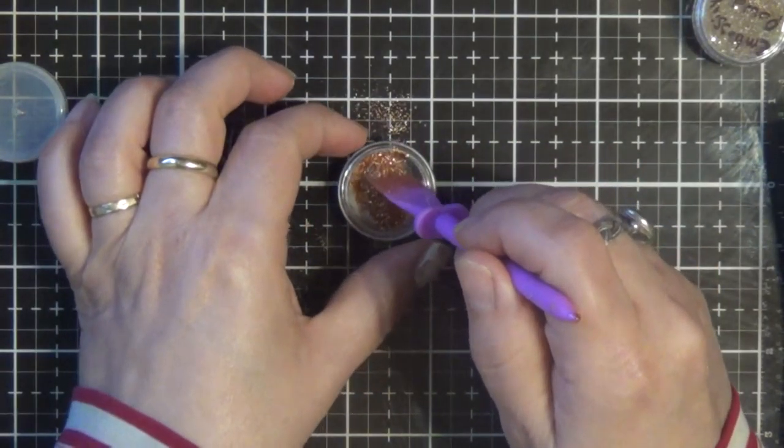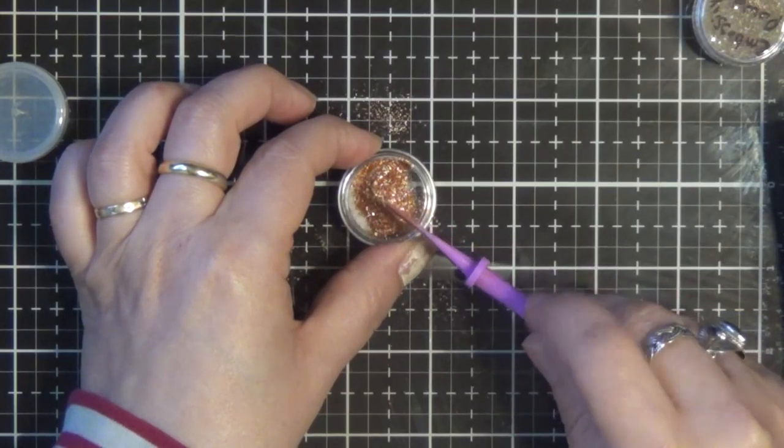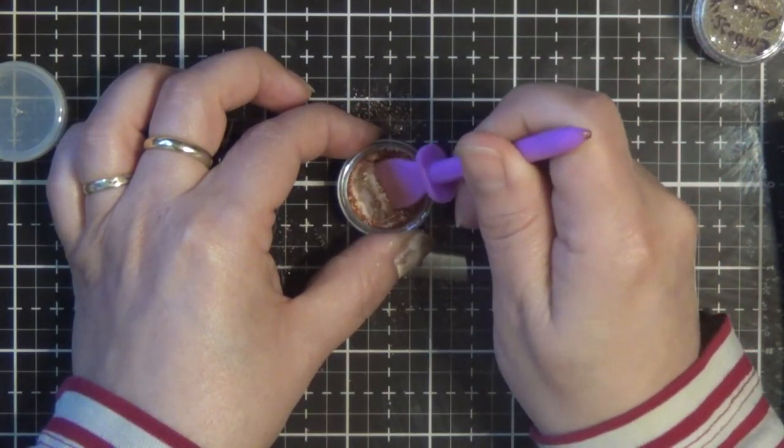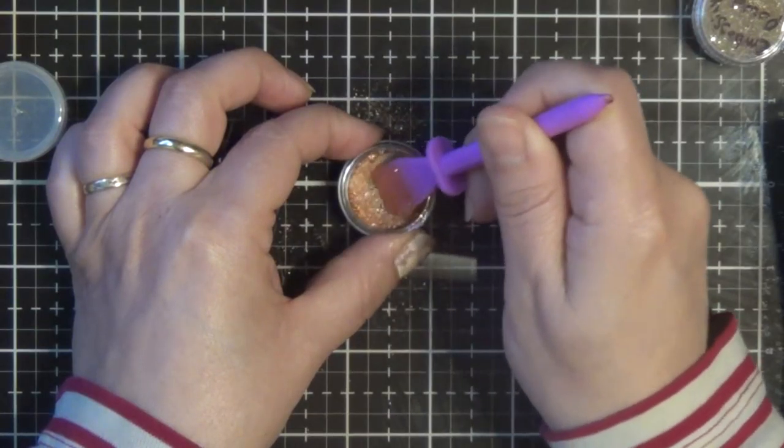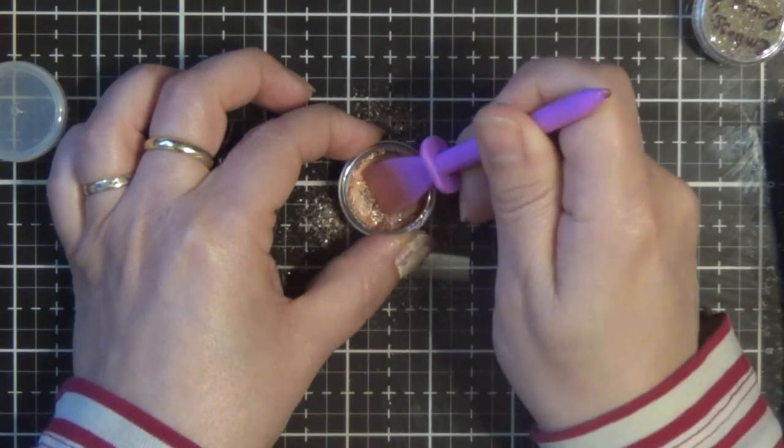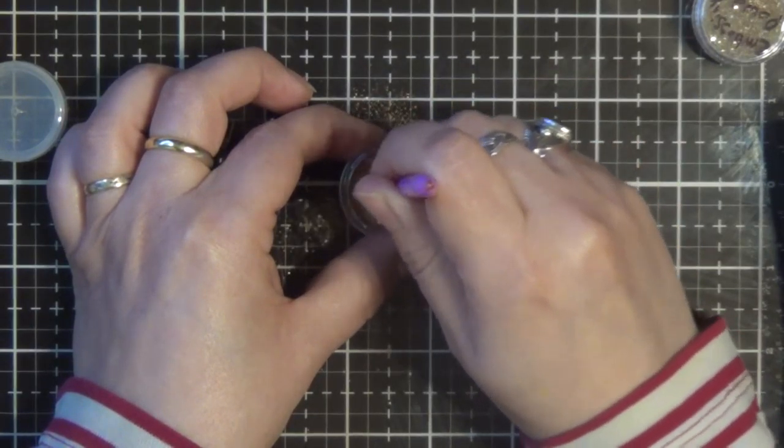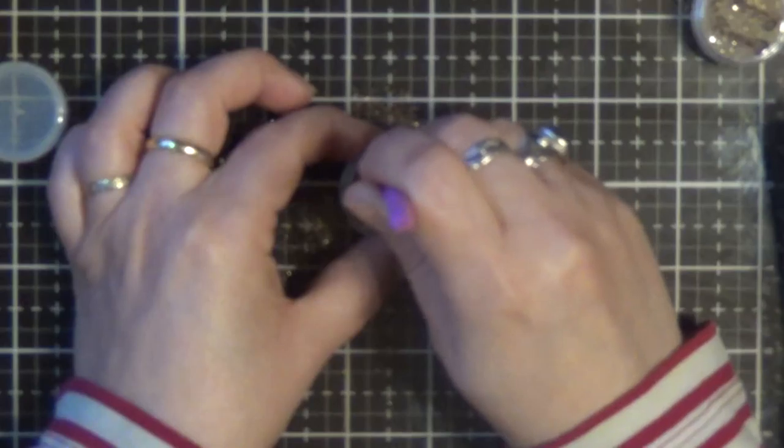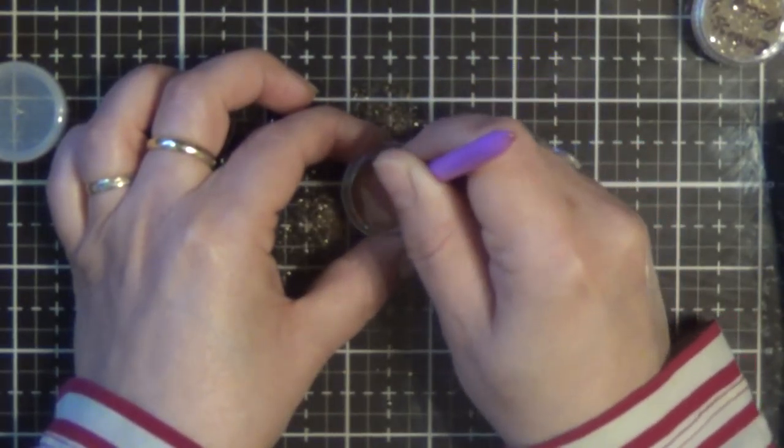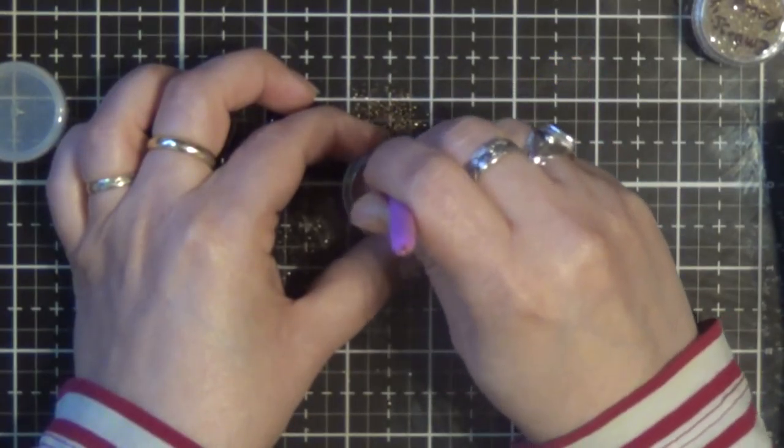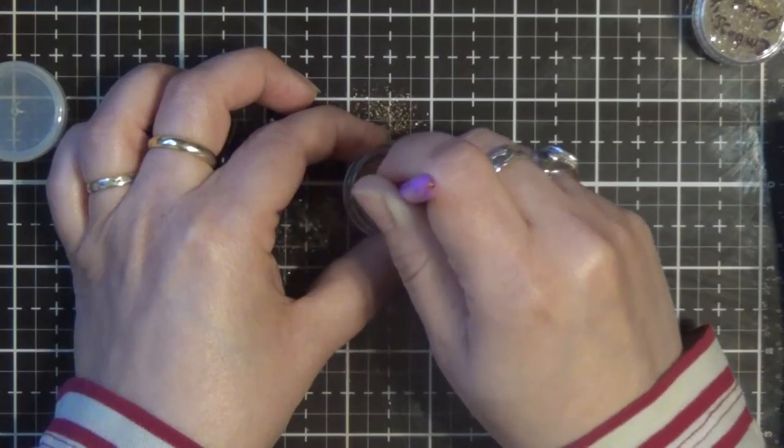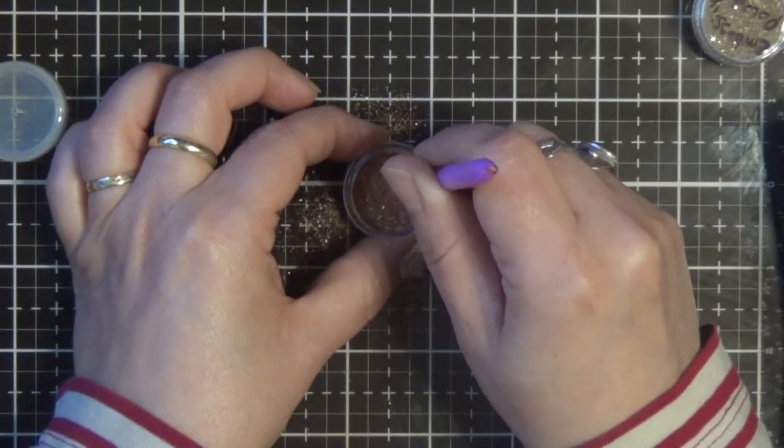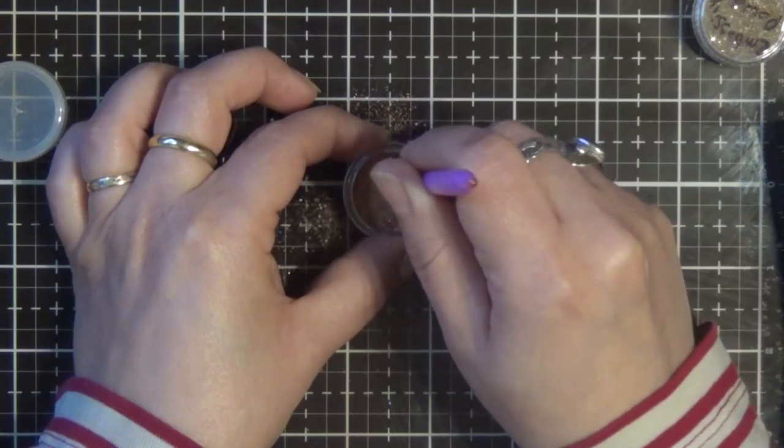I'm just going to put one scoop. Wow, that stuff is really fine. I'm going to have to clean my table off really good. Very nice. And I could probably shake it up some, but I'm trying to break up the little balls. So that's all this video is about, just making your own colored embossing powders with mica powders.